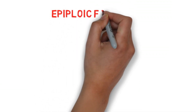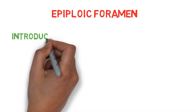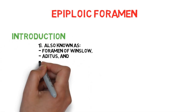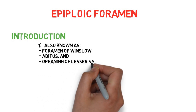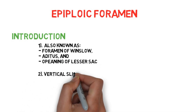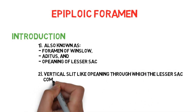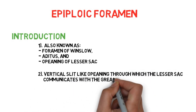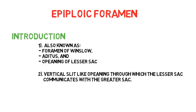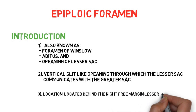Let's begin. The epiploic foramen can be called in three different ways: foramen of Winslow, aditus, and opening of the lesser sac. The epiploic foramen is defined as a vertical slit-like opening through which the lesser sac communicates with the greater sac.